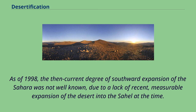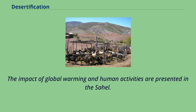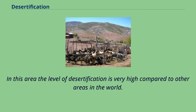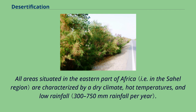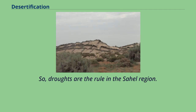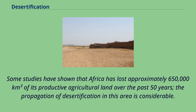As of 1998, the then-current degree of southward expansion of the Sahara was not well known, due to a lack of recent measurable expansion of the desert into the Sahel at the time. The impact of global warming and human activities are present in the Sahel, where the level of desertification is very high compared to other areas in the world. All areas situated in the eastern part of Africa are characterized by a dry climate, hot temperatures, and low rainfall, so droughts are the rule in the Sahel region. Some studies have shown that Africa has lost approximately 650,000 square kilometers of its productive agricultural land over the past 50 years, and the propagation of desertification in this area is considerable.